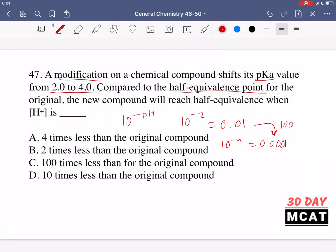There's a hundred fold difference between these two. So once again C is the correct answer because the new half equivalence point will be reached when this concentration of protons is 100 times less than for the original compound.